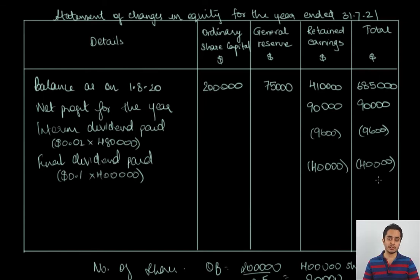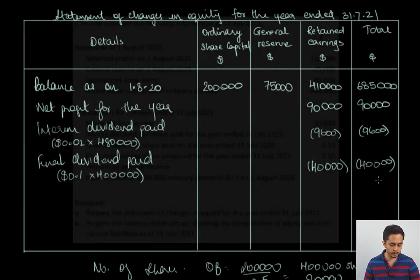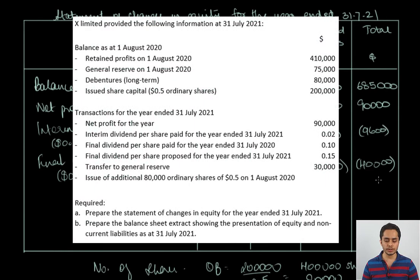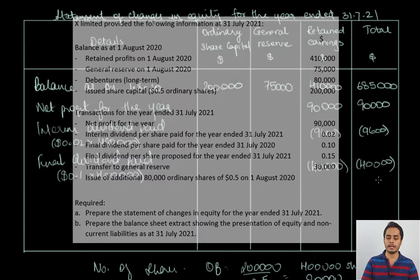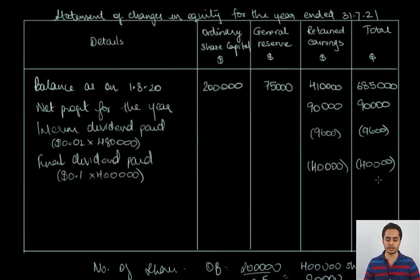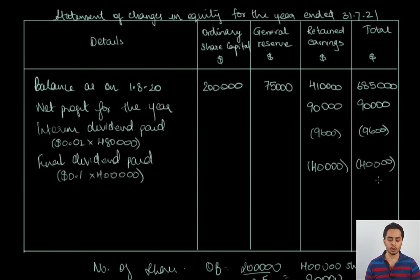Transfer to general reserve of $30,000: this transfer will be deducted from the retained earnings column and added to the general reserve column, so there is no change in the total column.